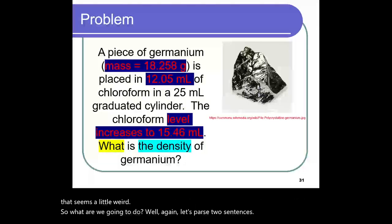Sorry about that. I actually managed to confuse myself a little bit. This happens. And that's when you say to yourself, let's go back and try again. A piece of germanium is placed in chloroform in a graduated cylinder. That's preamble.